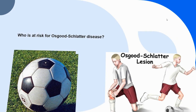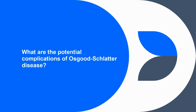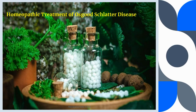Now let's talk about the complications of Osgood-Schlatter disease. Generally, it doesn't cause any long-term complications, but in rare cases children with this disease may experience chronic pain or ongoing swelling. However, taking over-the-counter pain relief and applying ice to the area can usually ease this discomfort. Now we'll talk about the homeopathic treatment.